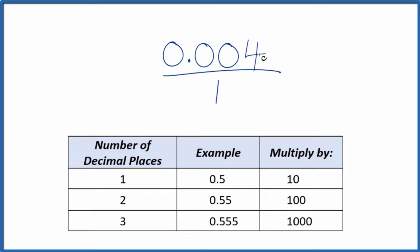What would be nice is if we could get this number here, 0.004, to a whole number. And I can see we have 1, 2, 3 decimal places. With 3 decimal places, we're going to multiply by 1,000. That'll give us a whole number.